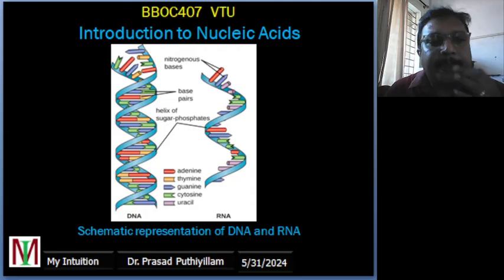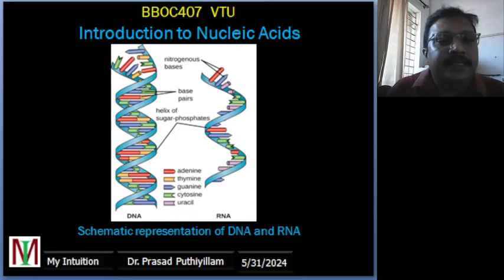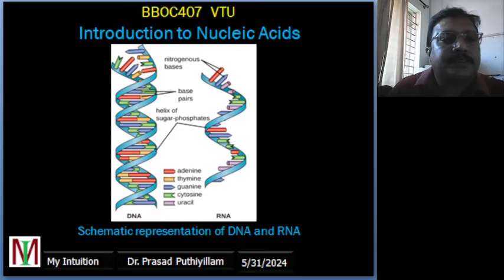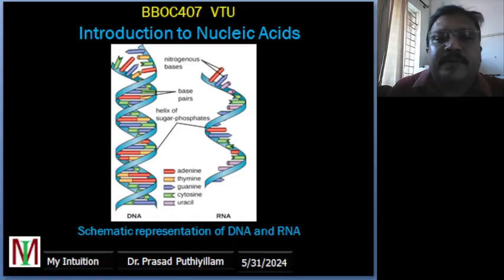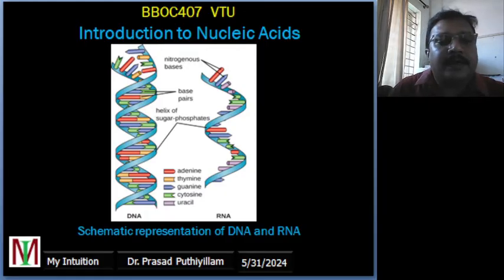The human DNA, for instance, consists of around 3 billion base pairs, which encodes the instructions necessary for building and maintaining the human body. Whereas RNA — Ribonucleic Acid — serves as a messenger that carries instructions from DNA for protein synthesis. Unlike DNA, RNA is usually single-stranded and comes in several forms: mRNA, tRNA, and rRNA.